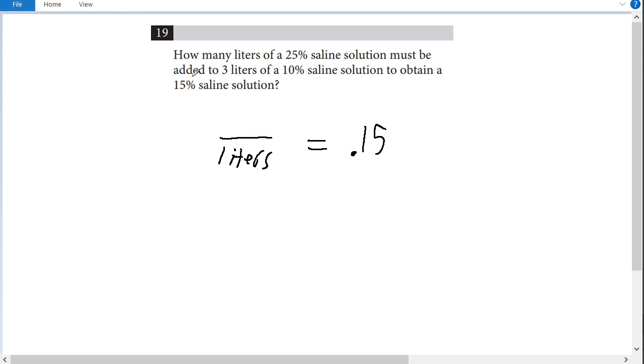Okay, so we know that we have some number of liters of a 25% saline solution. So 0.25 times that number of liters, which I'll just call x, will give us the total amount of saline in this number of liters of solution.